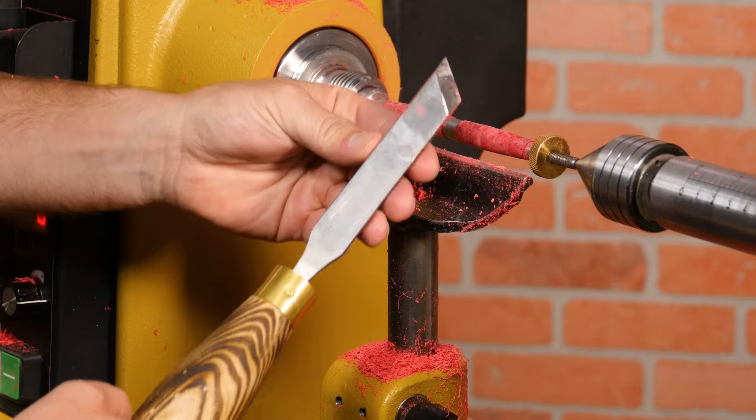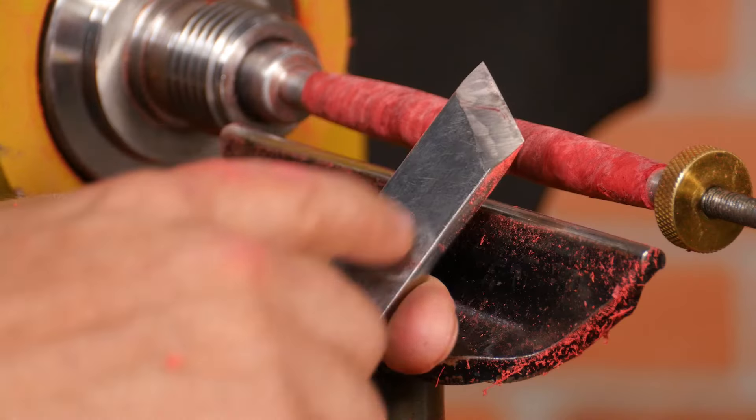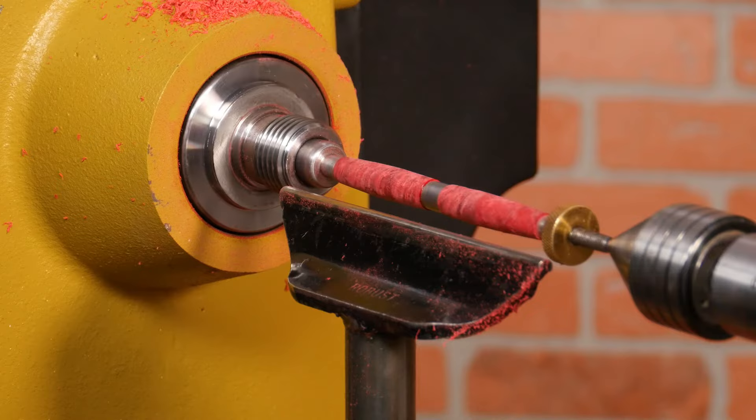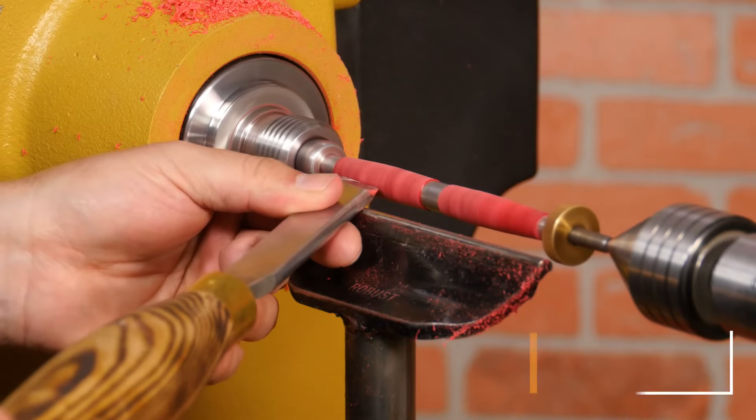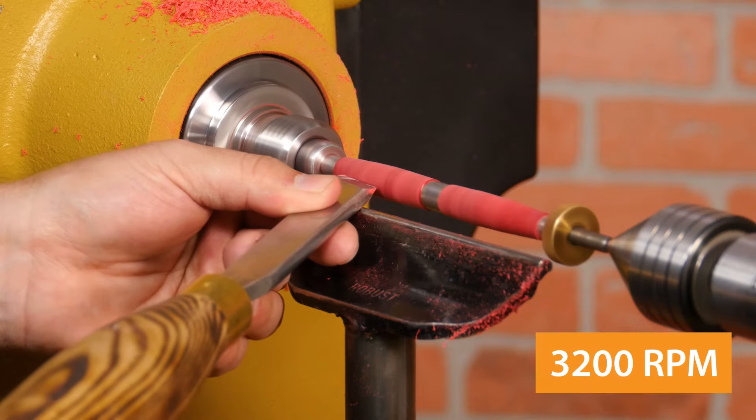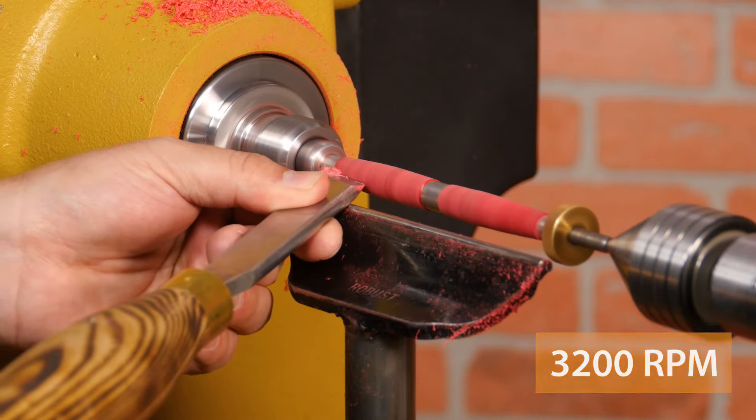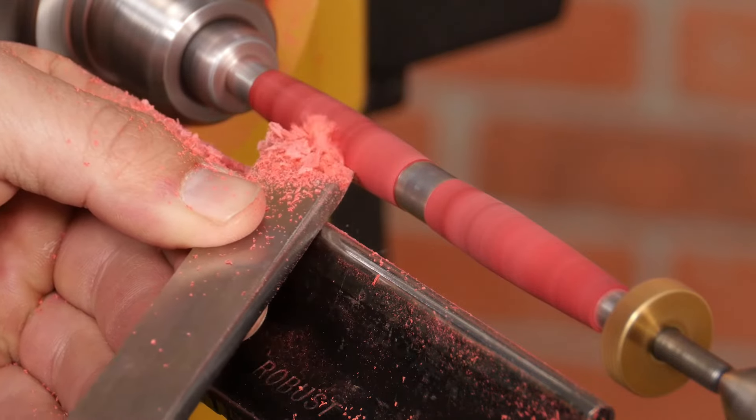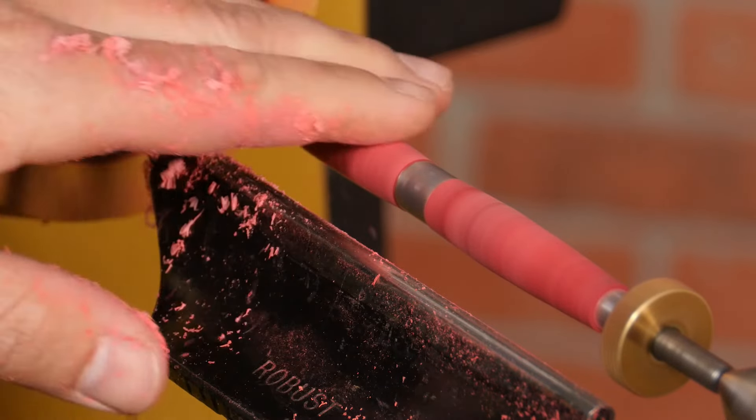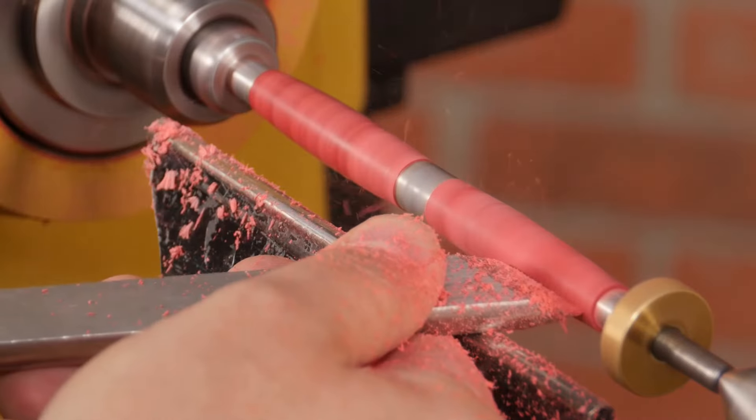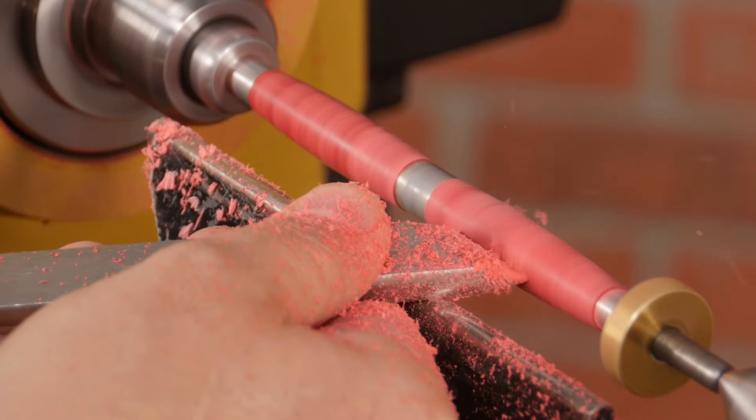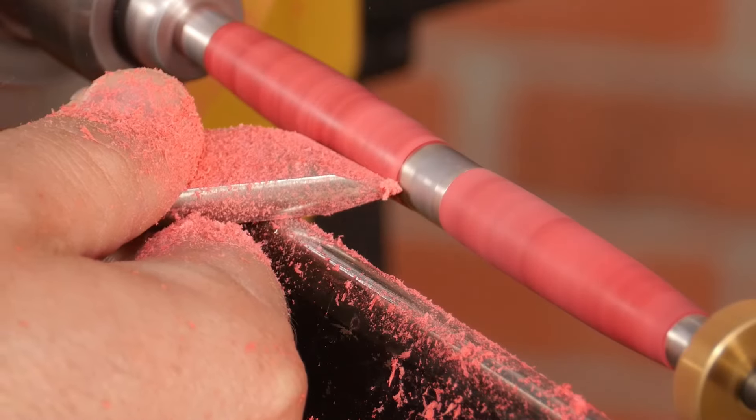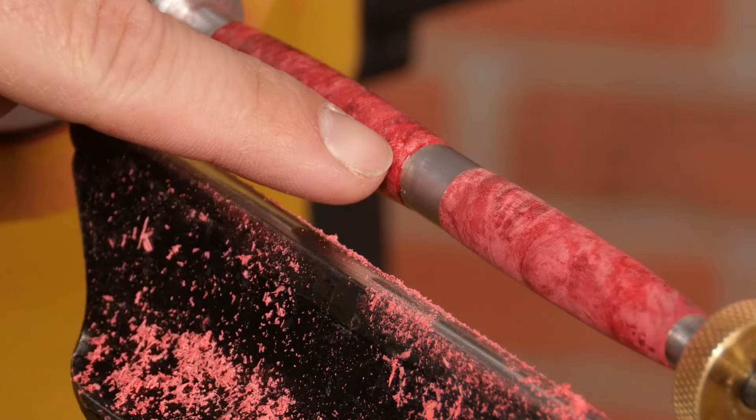Now that your blanks are shaped and close to the finished size, it's time for the skew chisel. The skew is the perfect tool for achieving a super smooth finish in just a few light cuts. Hold the tool flat on the tool rest keeping the lathe around 3200 RPM. Advance the tool slowly making a light scraping cut to even out the turning and smooth the surface. Using the tool like this is easy to control and produces a great surface. Turn until the blank is slightly proud of the bushings to compensate for sanding.